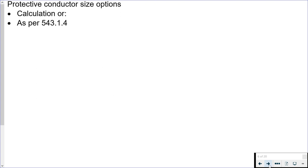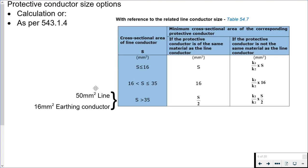When it comes to checking for our protective conductor size options, we have two options: we can check it by calculation or as per regulation 543.1.4. 543.1.4 basically tells us to look in table 54.7.